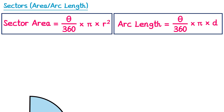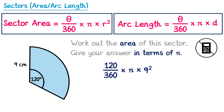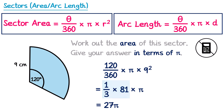In this next question we're given a sector and asked to work out the sector area, but we're asked to give our answer in terms of pi. The angle theta is 120 and the radius is 9. Since this is in terms of pi, we're probably not going to have a calculator, so we need to work this out ourselves. The fraction 120 over 360 simplifies to 1 over 3. Then we have times pi times 9 squared, which is 81. Reordering: 1 third times 81 times pi. One third of 81 is 27, so the answer is 27 pi centimetres squared.